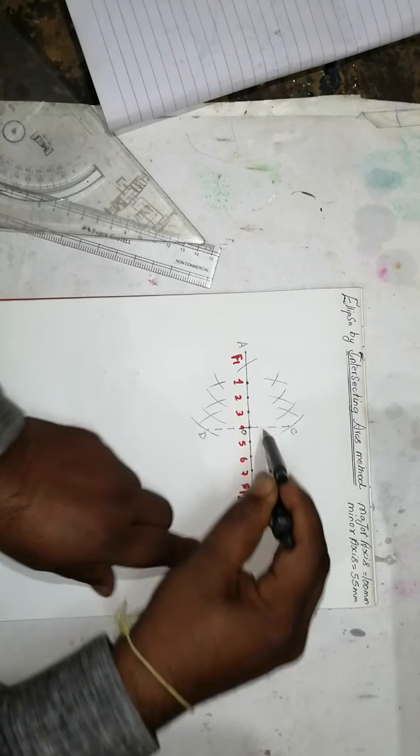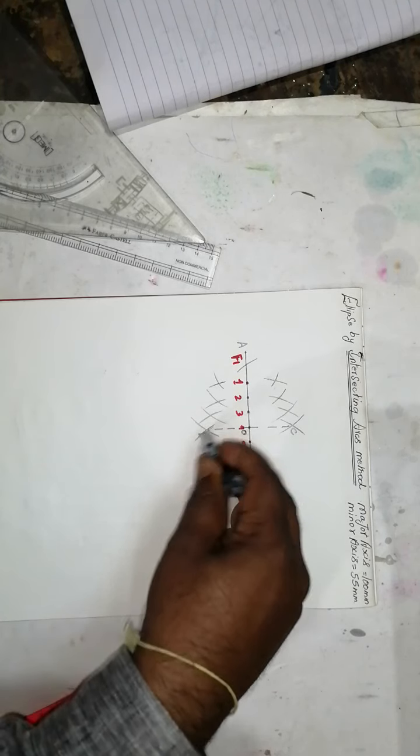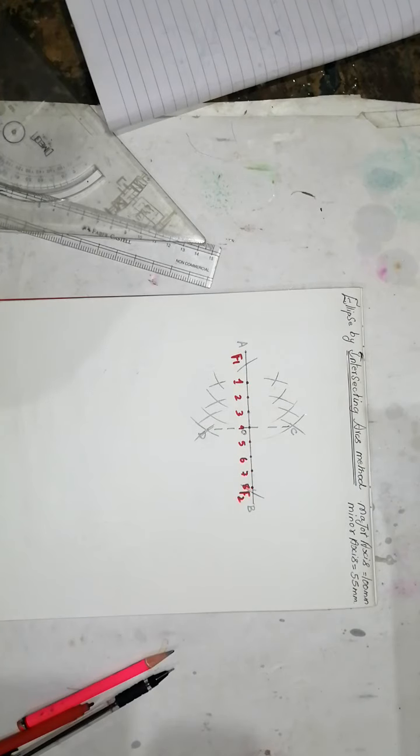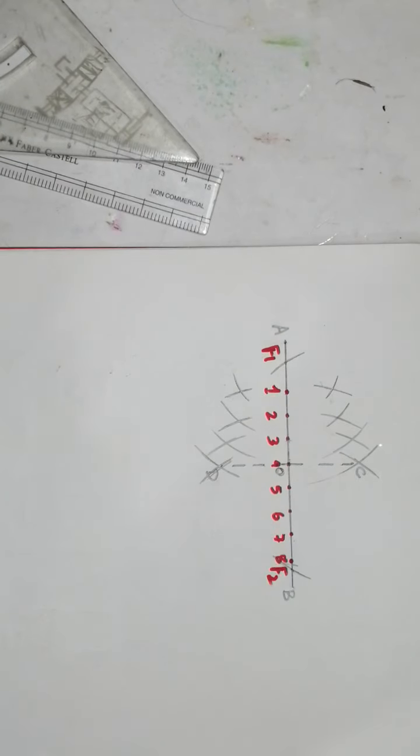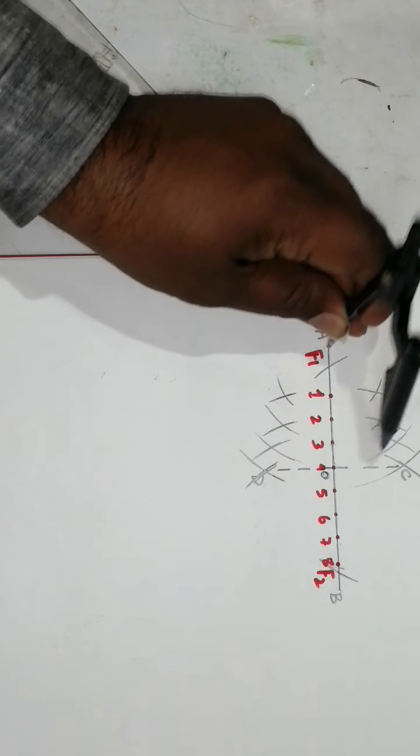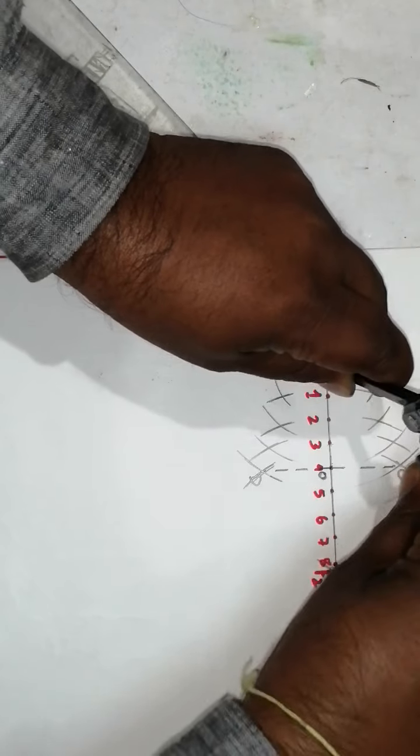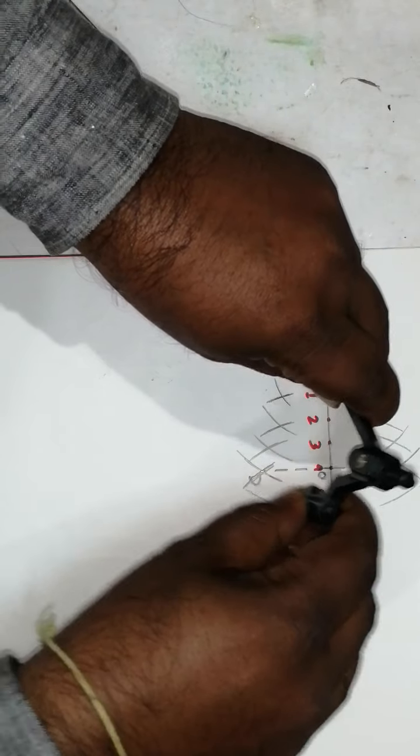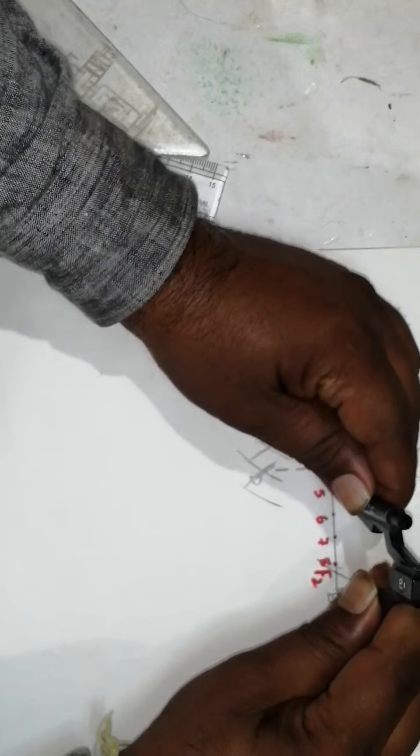Keep point B, taking F2, cut one arc so the arc will come like this. Again, keep F1 at point 5, keeping the focus point, cut one arc. Keep B at F5, keeping the focus point, and cut the arc.